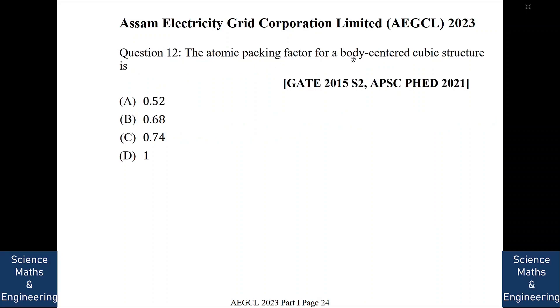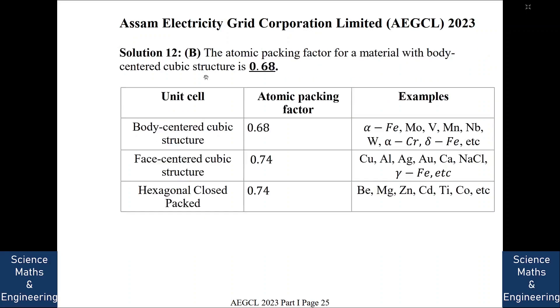The atomic packing factor for a body centered cubic structure is. So the answer is 0.68. So if it is a body centered cubic, it is 0.68. If it is a face centered cubic structure, it is 0.74. And if it is a hexagonal close packed, it is again 0.74. And here are some of the examples of this kind of structure materials. We will go to the next question.